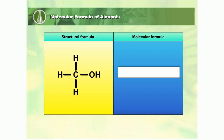Based on the structural formula, let's write the molecular formula of alcohol. First, identify the total number of carbon atoms, then write the number of carbon atoms as a subscript. If there is only one atom, we just write the symbol of the atom. Next, count the total number of hydrogen atoms which are directly attached to the carbon atom. There are three hydrogen atoms directly attached to the carbon atom. So, write the symbol of hydrogen, then 3 as the subscript. Finally, write the functional group of alcohol.